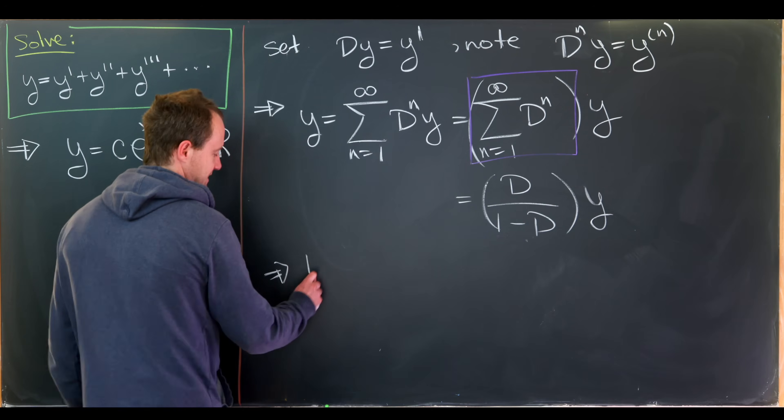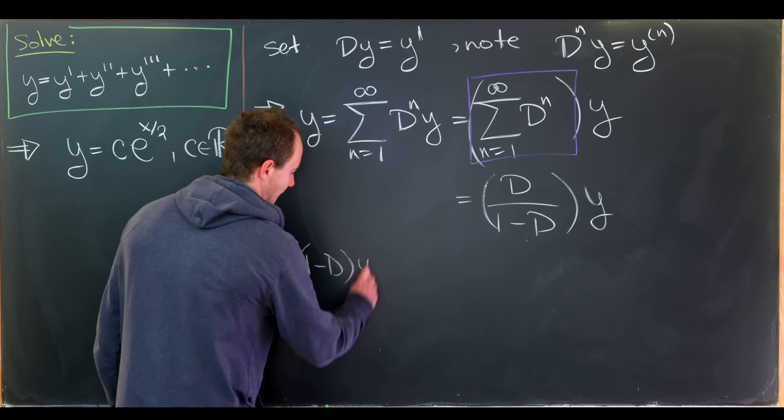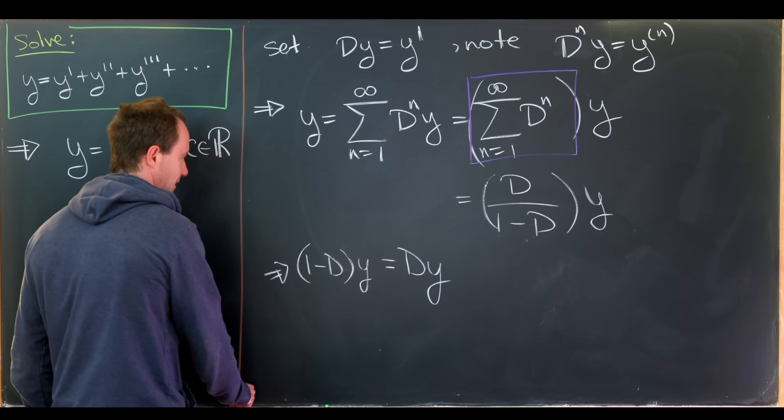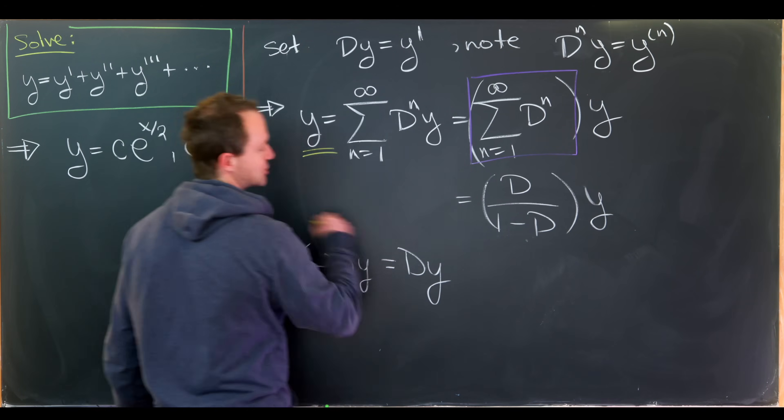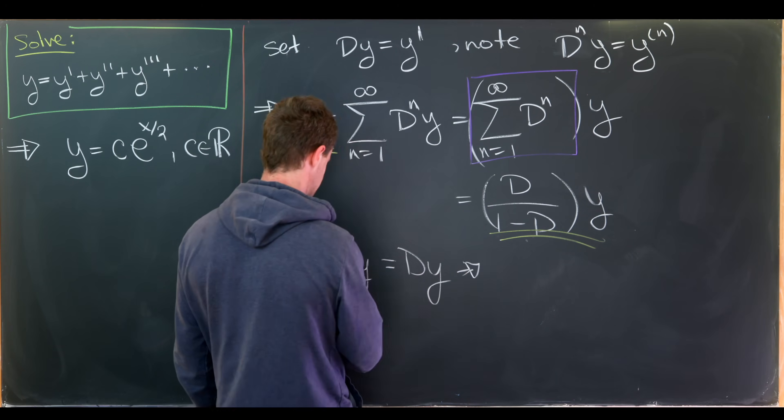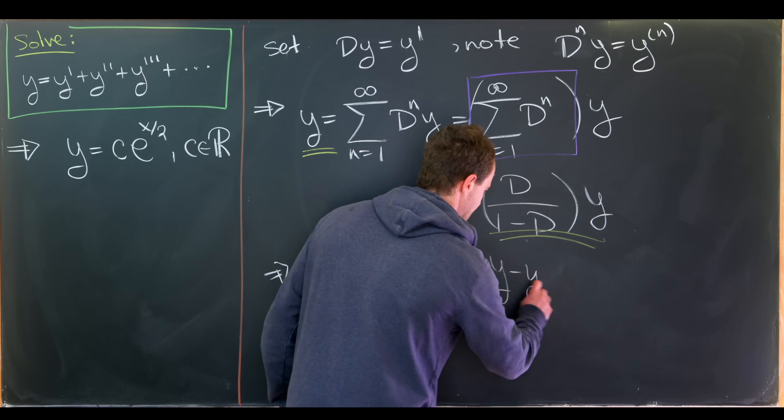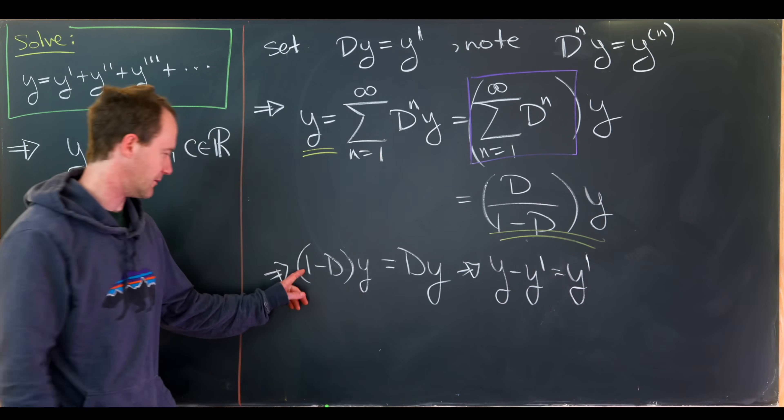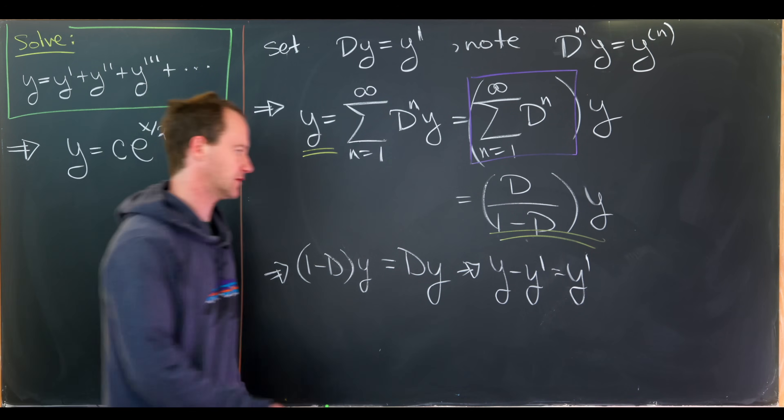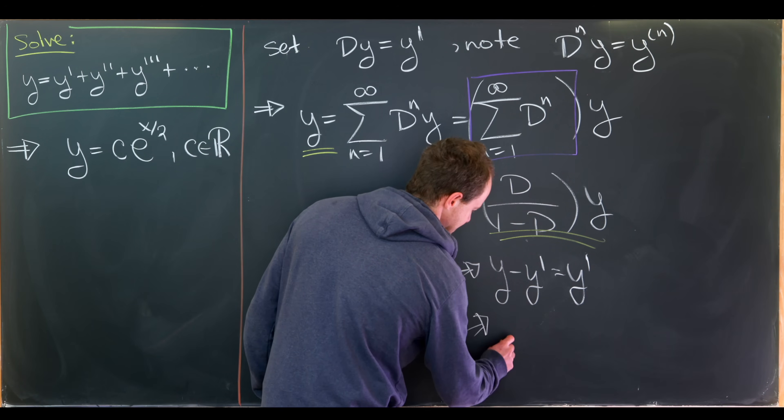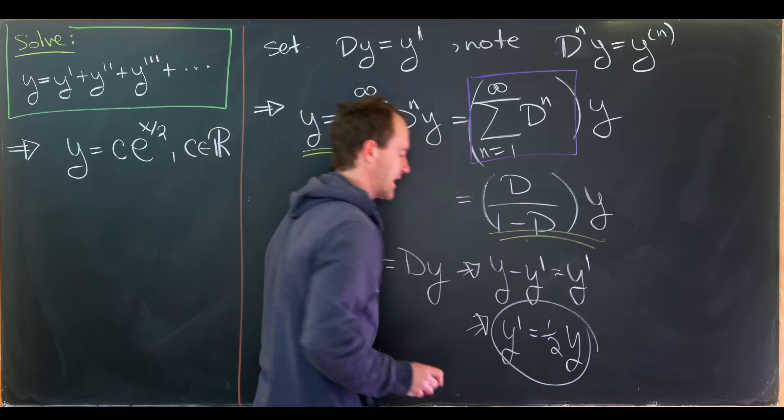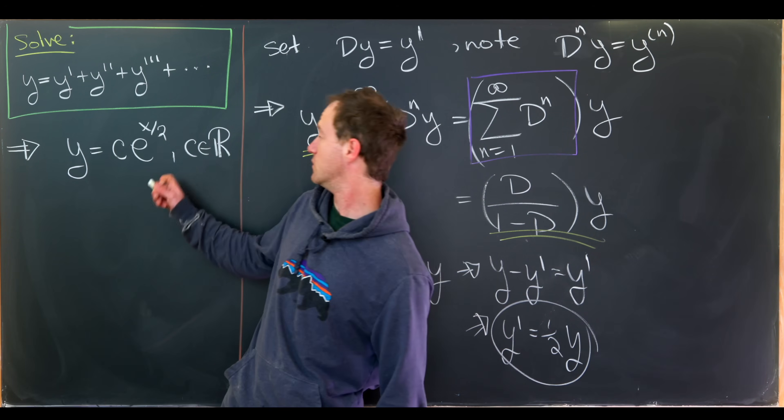But now from here I'll operate both sides of this equation by the operator 1 minus d. So that'll clear the 1 minus d in the denominator. So anyway that will give us the operator 1 minus d acting on y is equal to d acting on y. But notice that leaves us with y minus y prime equals y prime. That immediately gains the differential equation y prime equals 1 half y which we had on the previous board which led to this solution.